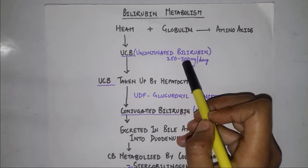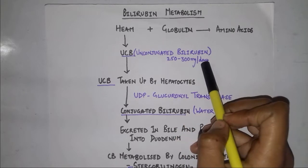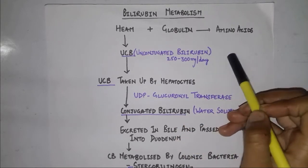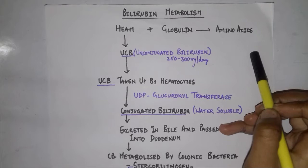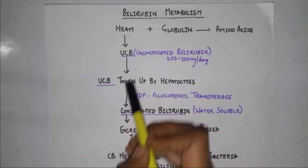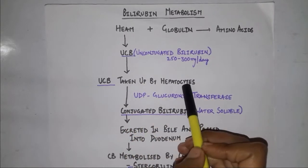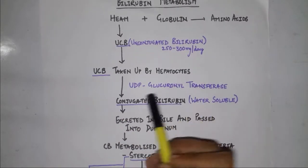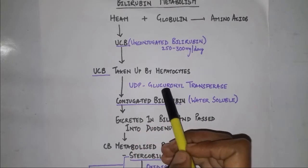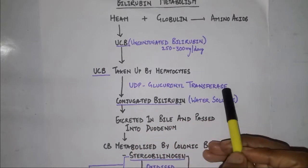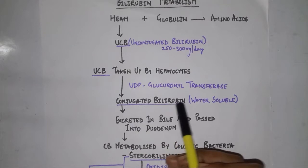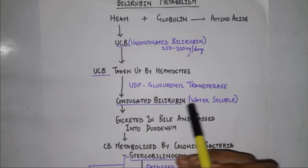Unconjugated bilirubin is produced 250 to 300 mg per day. It is lipid soluble and insoluble in water. Unconjugated bilirubin is then taken up by the hepatocytes, where it is acted upon by UDP glucuronyl transferase and converted into conjugated bilirubin.